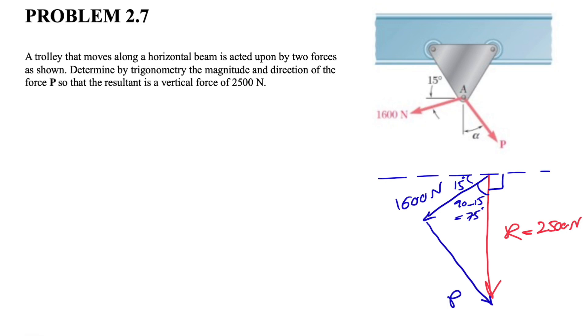For finding P, we can use the law of cosines. We know that P squared is equal to 1600 squared plus R squared, which is 2500 squared, minus two times...